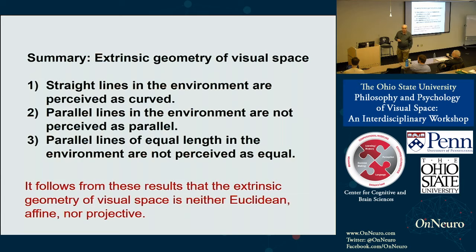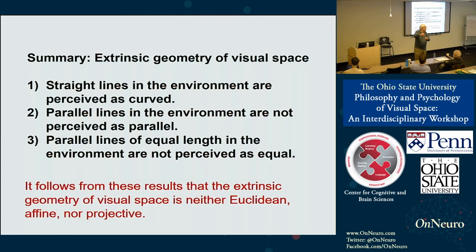To conclude this section: straight lines in the environment are perceived as curved; parallel lines are not perceived as parallel; parallel lines of equal length are not perceived as equal. Therefore the extrinsic geometry of visual space is neither Euclidean, affine, nor projective. As a general rule, there are individual differences and task differences depending on how you probe subjects, but veridical perception is not the norm.